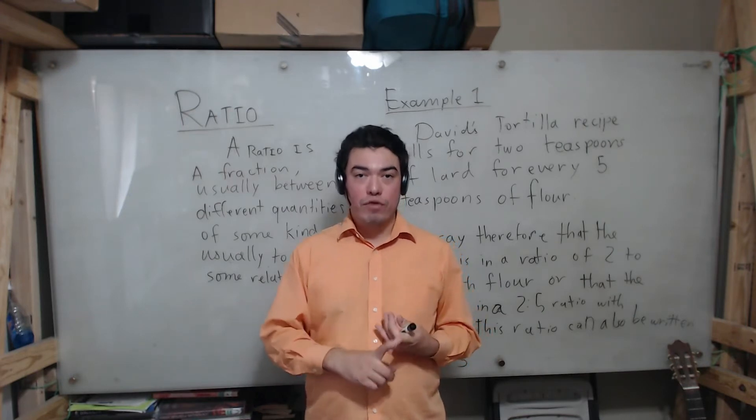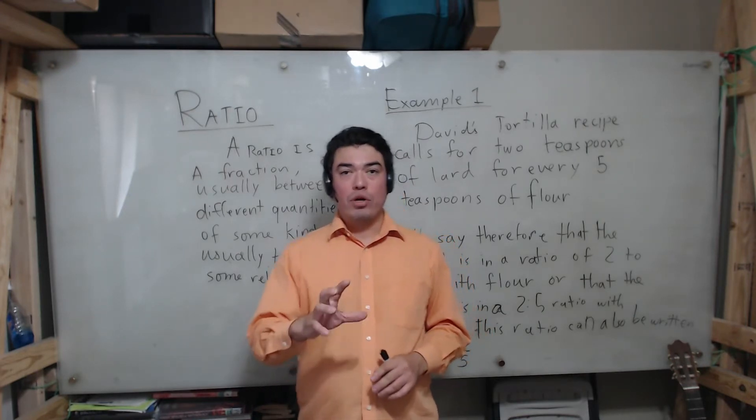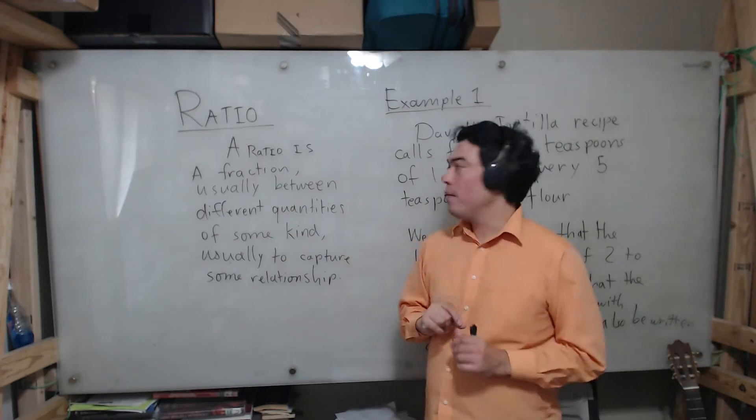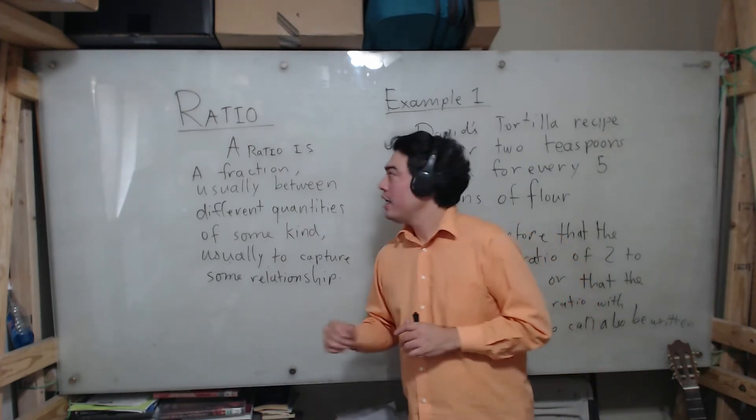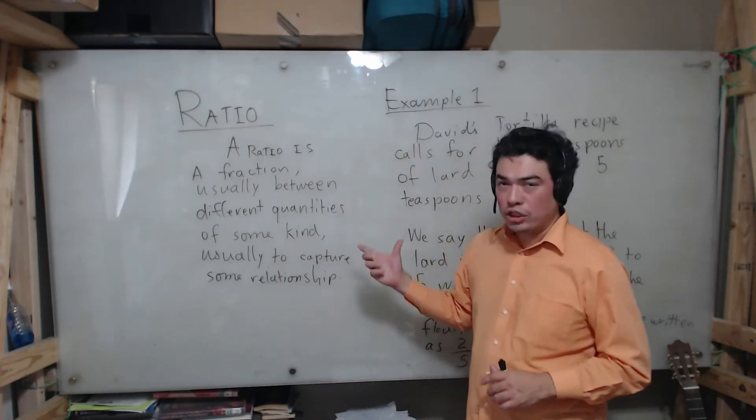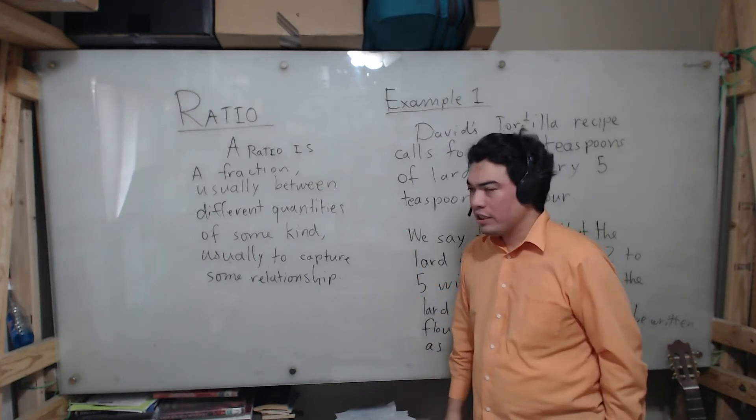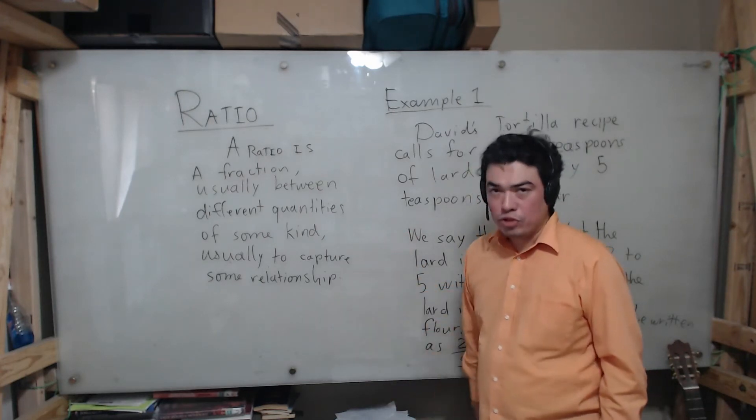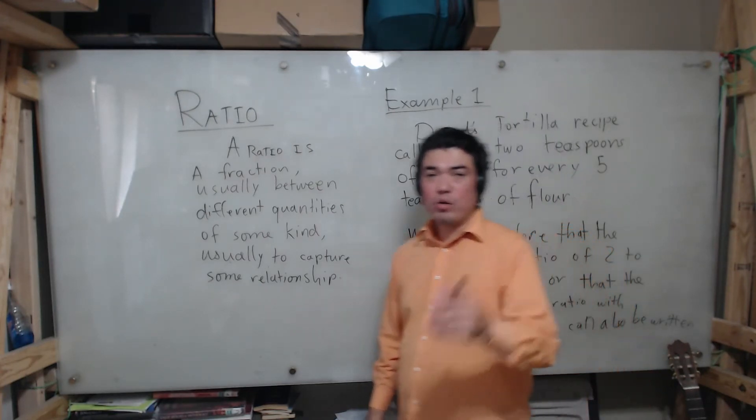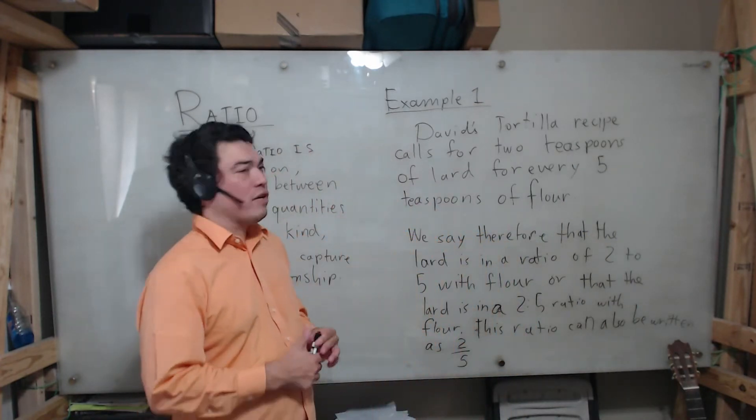In other words, what I want you to get out of this first part is that a ratio is a fraction, usually between different quantities of some kind, usually to capture some relationship. I'm going to start with my first example which is just a very simple ratio problem. It's actually not a problem, but it's just to show how we can see a ratio in the real world in a practical situation.